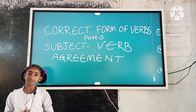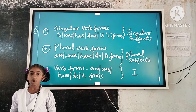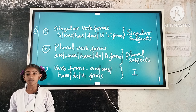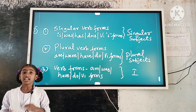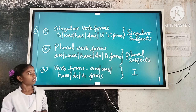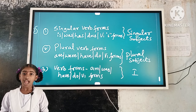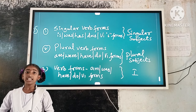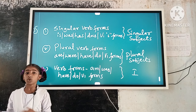How do verb forms agree with subjects? Singular verb forms such as is, was, has, does agree with singular subjects. Plural verb forms such as are, were, have, do agree with plural subjects. Verb forms such as am, was, have, do agree with 'I'. In short, singular verb forms agree with singular subjects, and plural verb forms agree with plural subjects.